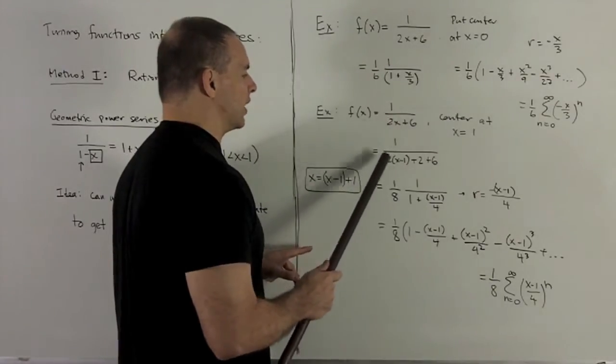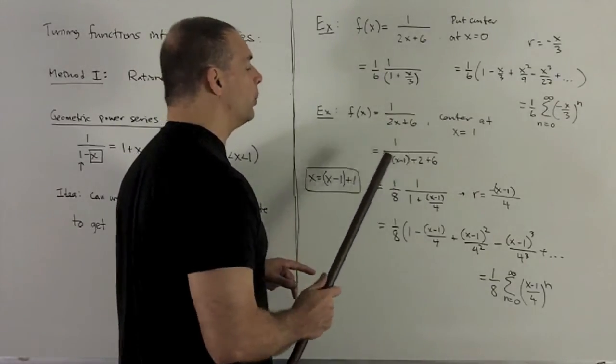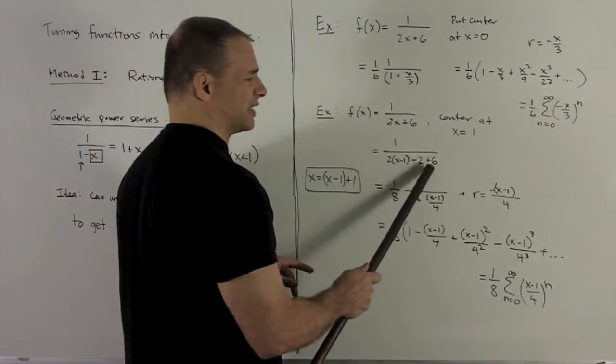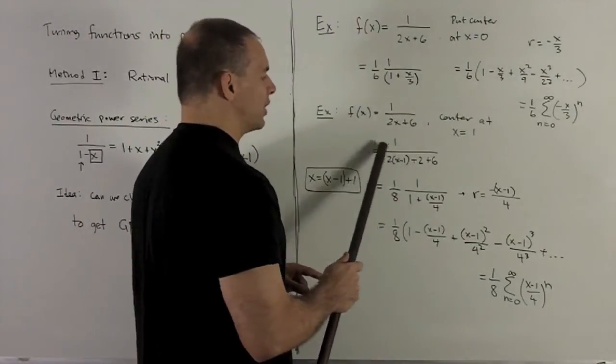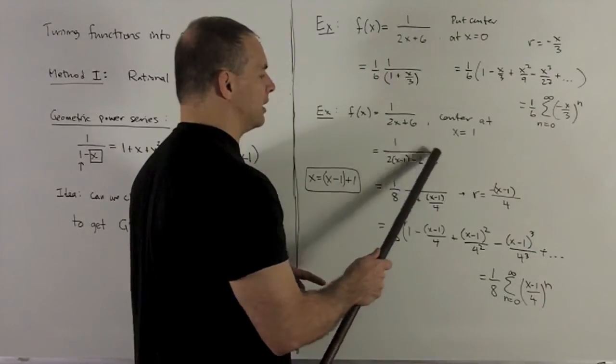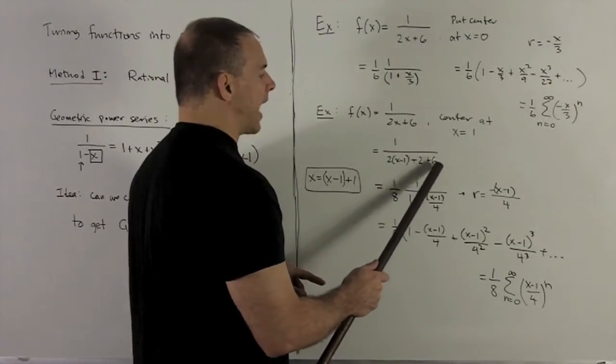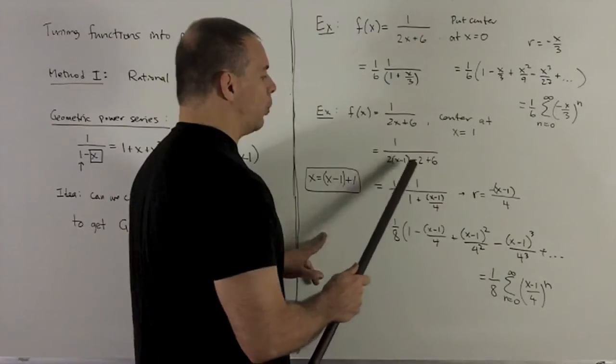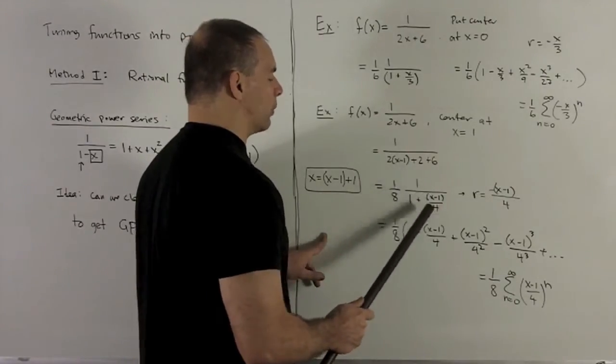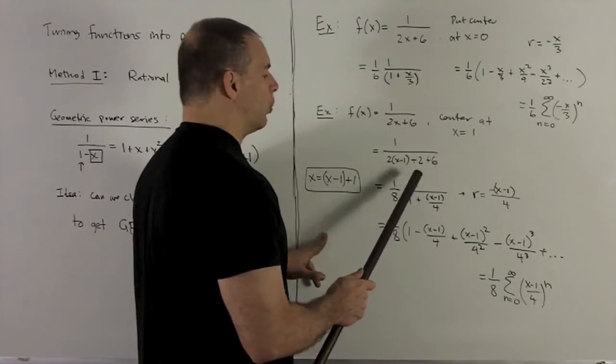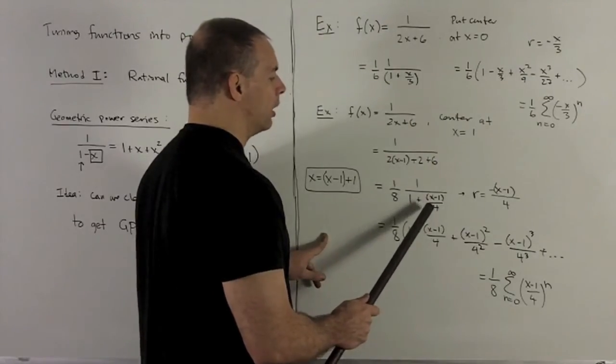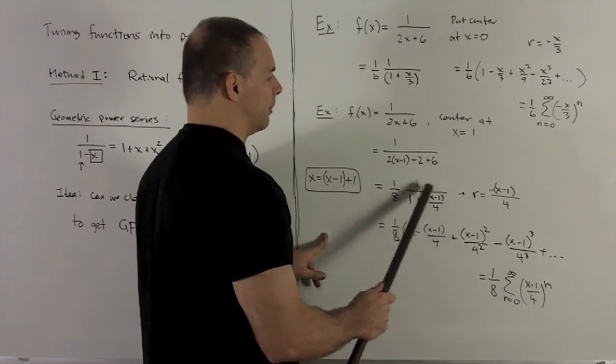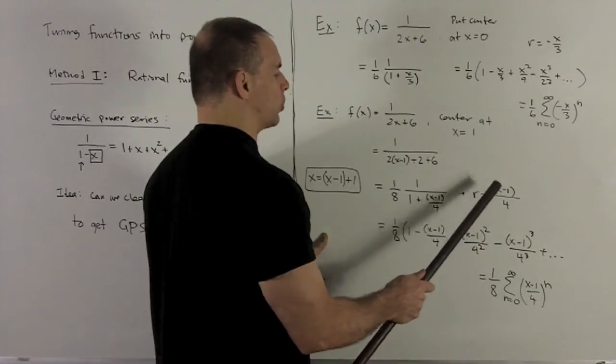So let's take a look. Where I see my x, I put an x minus 1 plus 1. So here, when 2 hits it, I'm going to get 2x minus 1 plus 2. So I can combine the 2 and the 6 to get an 8. And then using the trick from above, we know whatever's here is going to get dumped in the box. So I clean this up to get a 1. So I factor out an 8. That's going to give me 1 over 1 plus x minus 1 over 4. So this is going to be 1 over 1 minus a minus x minus 1 over 4. So this is going to be what's in the box. Minus x minus 1 over 4.